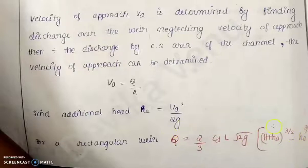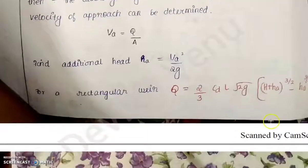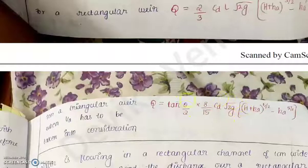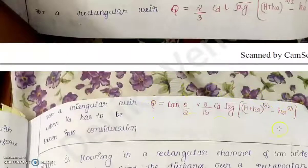So already there is a head due to velocity of approach and then additional head H plus HA is there. That is how our equation becomes into (H + HA) raised to 3/2 minus HA raised to 3/2. This is the modified equation for the rectangular weir when you consider velocity of approach. For the triangular weir, when you consider velocity of approach, it becomes (H + HA) raised to 5/2 minus HA raised to 5/2.